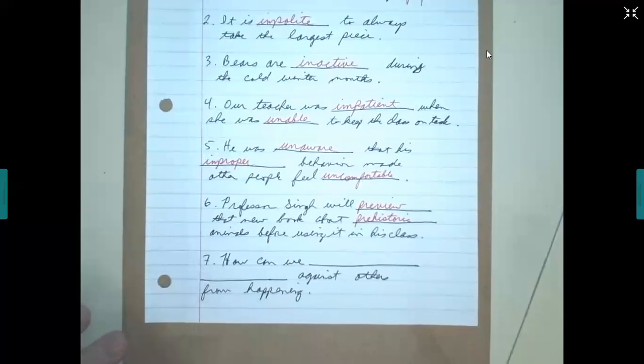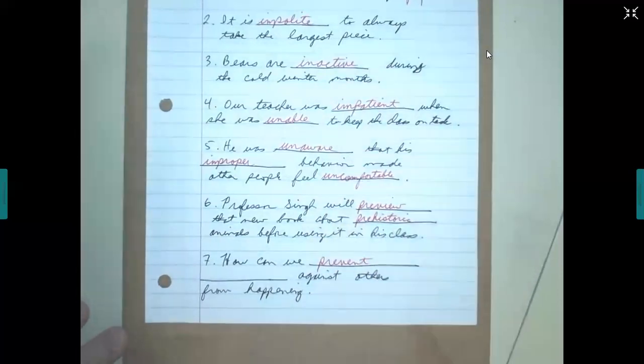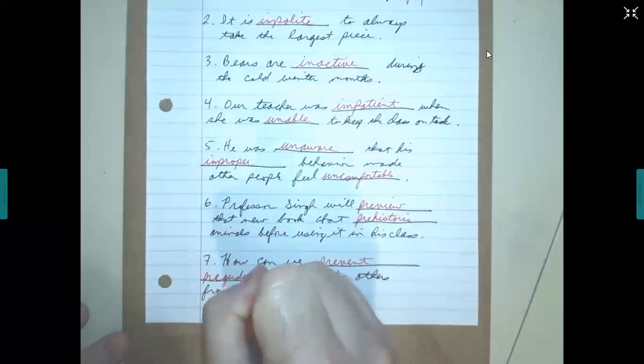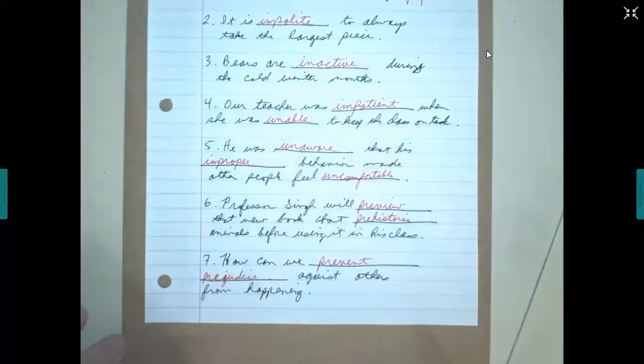All right. Last one. How can we blank blank against others from happening? So we want to put, how can we prevent prejudice? How can we prevent prejudice against others from happening?